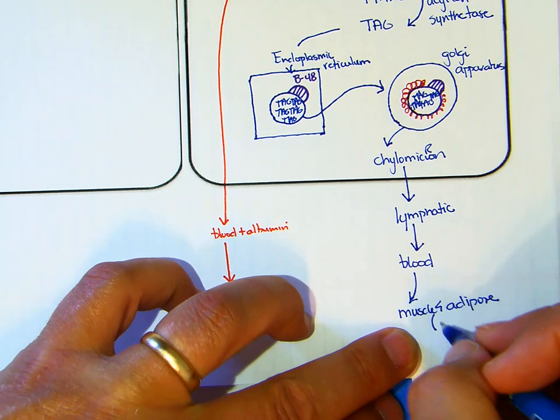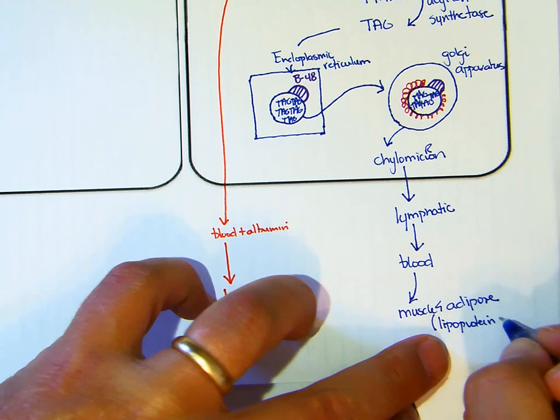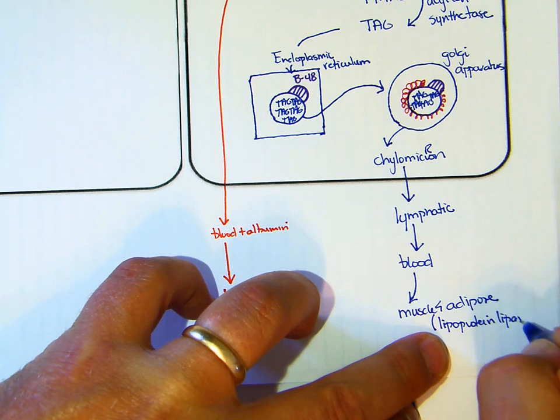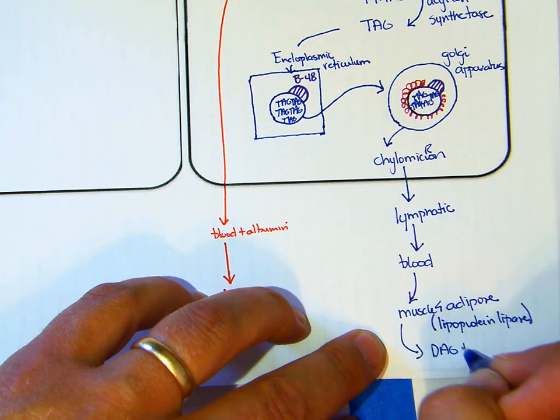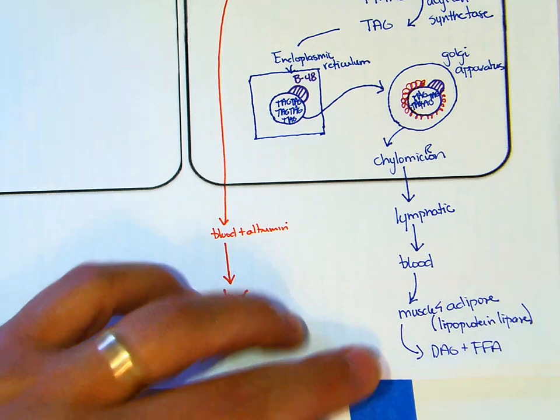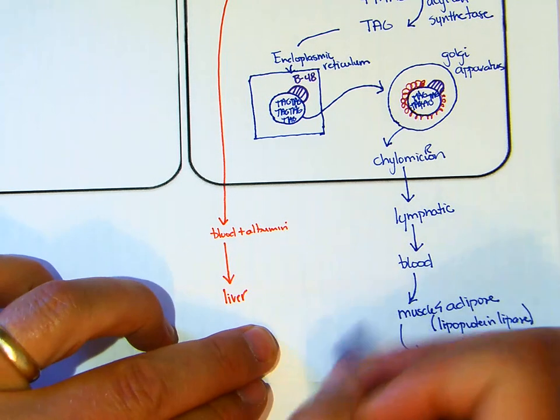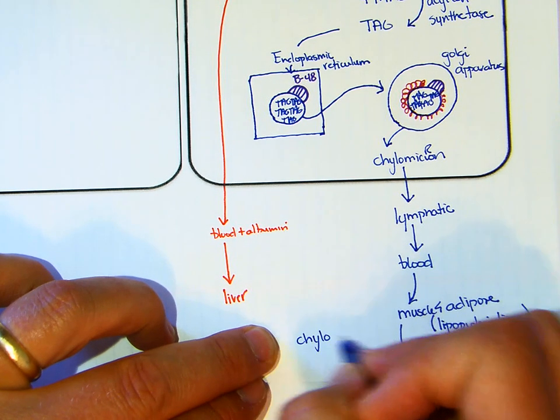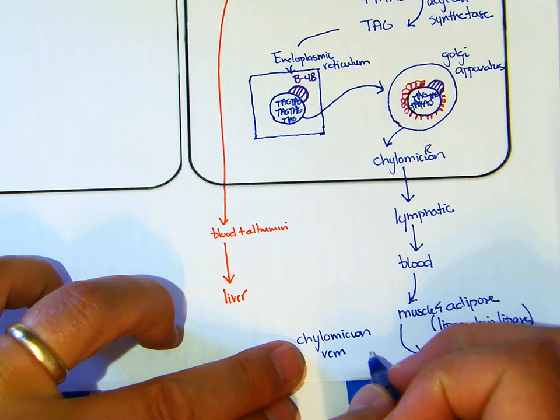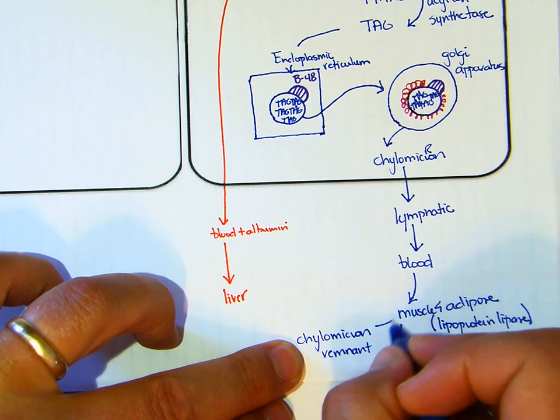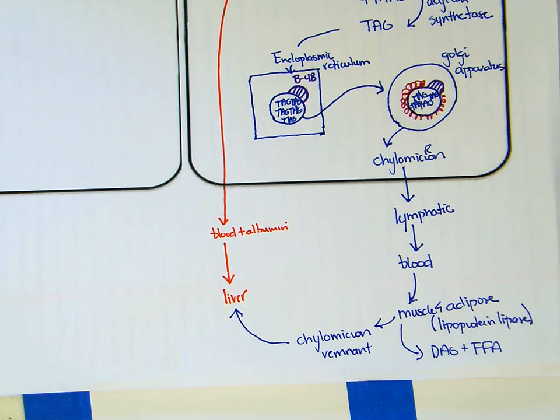There we have lipoprotein lipase, which is going to remove TAG plus free fatty acid, which could absorb into the muscle or adipose. Once all the TAG has been removed, we have a chylomicron remnant, and the chylomicron remnant is then removed from the liver.